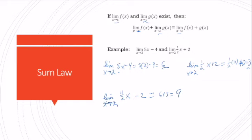We can verify this: if we plugged in 2 to the combined function, we'd have (11/2)(2) minus 2. (11/2) times 2 is just 11, and 11 minus 2 is positive 9. That's our sum law.